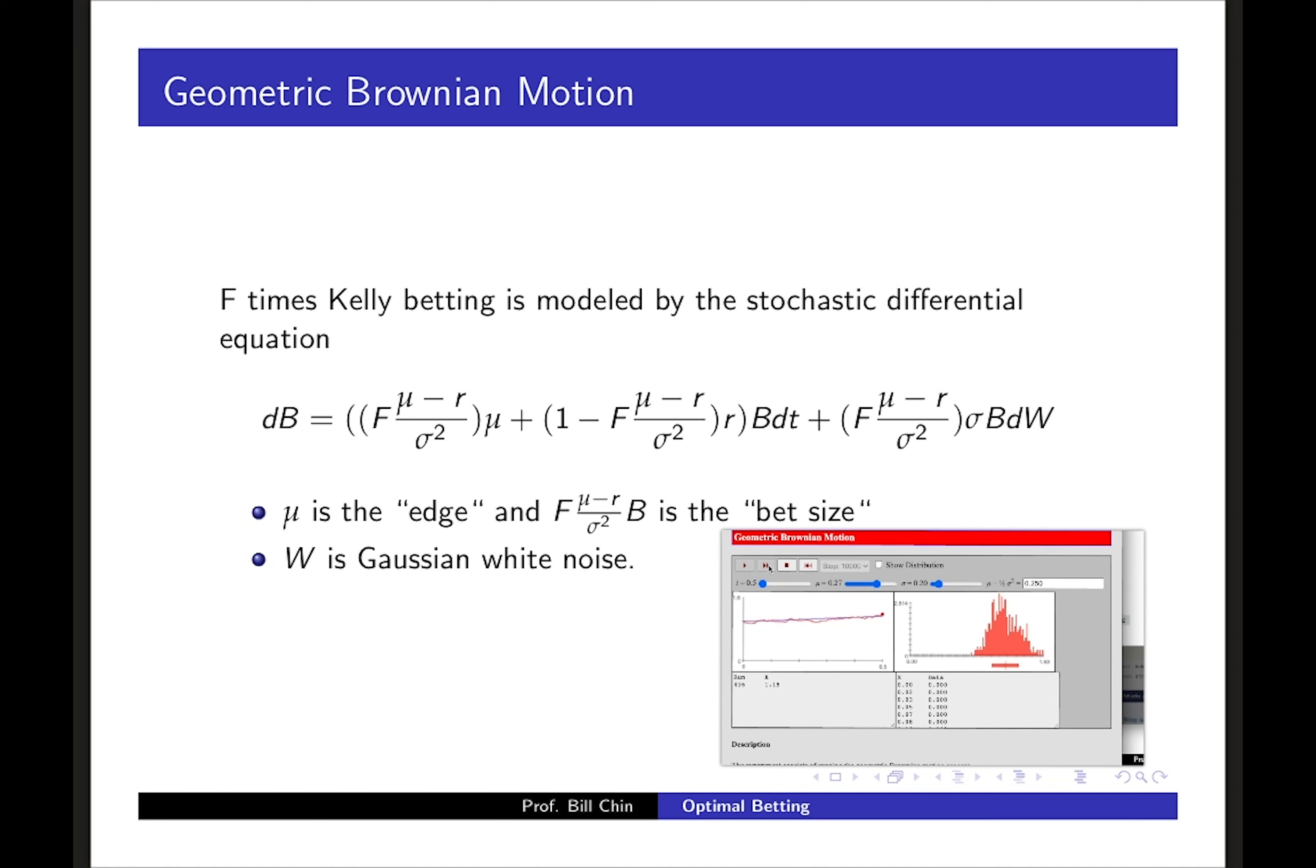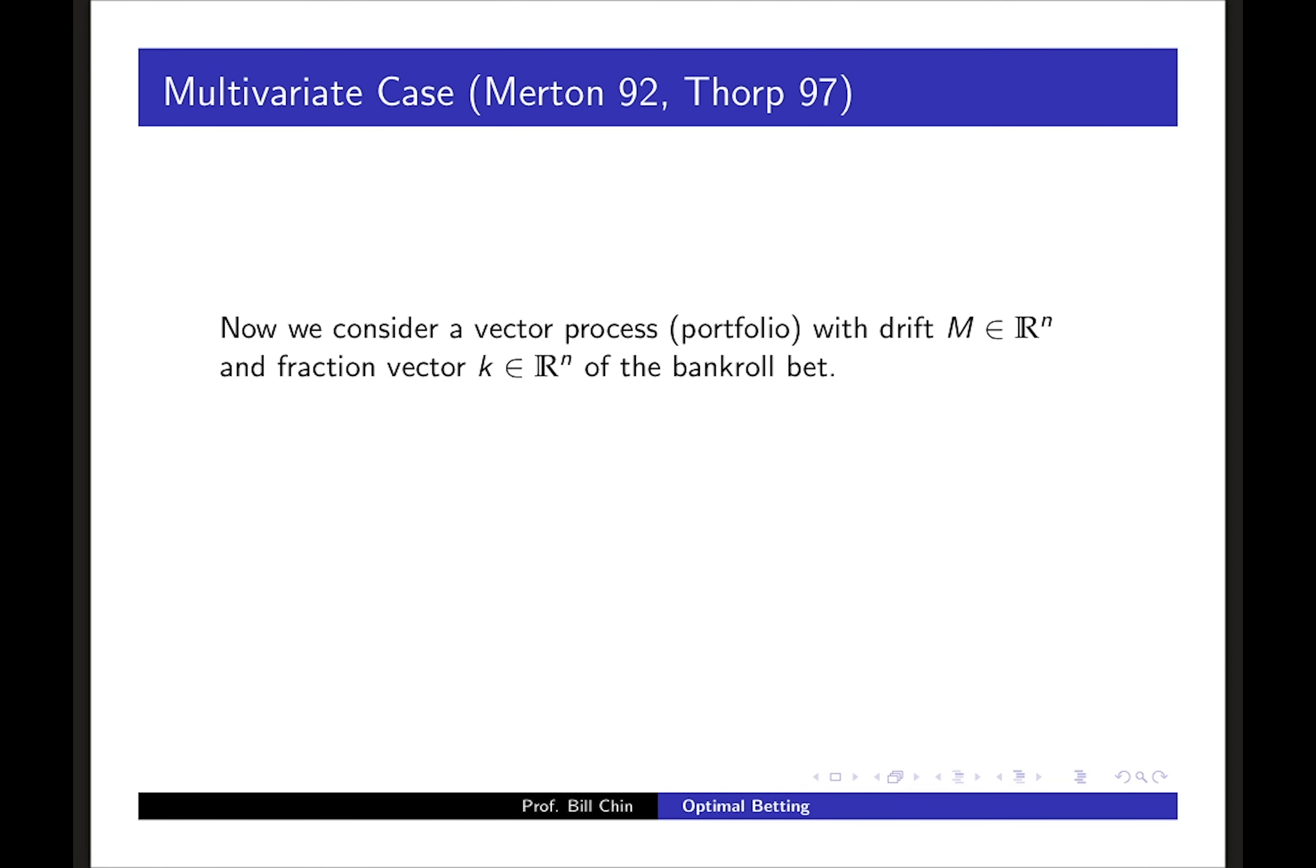We can generalize further to the multivariate case where we're talking about a vector process which represents perhaps a portfolio or many simultaneously correlated bets with a drift term M and a fraction vector k of the bankroll bet and we have a covariance matrix C. Then we find that the asymptotic growth is optimized at the fraction shown using C and M minus the risk-free vector, and this is due to Merton who won the Nobel prize in economics in 1997, and there's a relatively simple exposition by Ed Thorp. We can note that this formulation recaptures the Markowitz mean variance optimization which incidentally earned Markowitz the Nobel prize in economics in 1990.